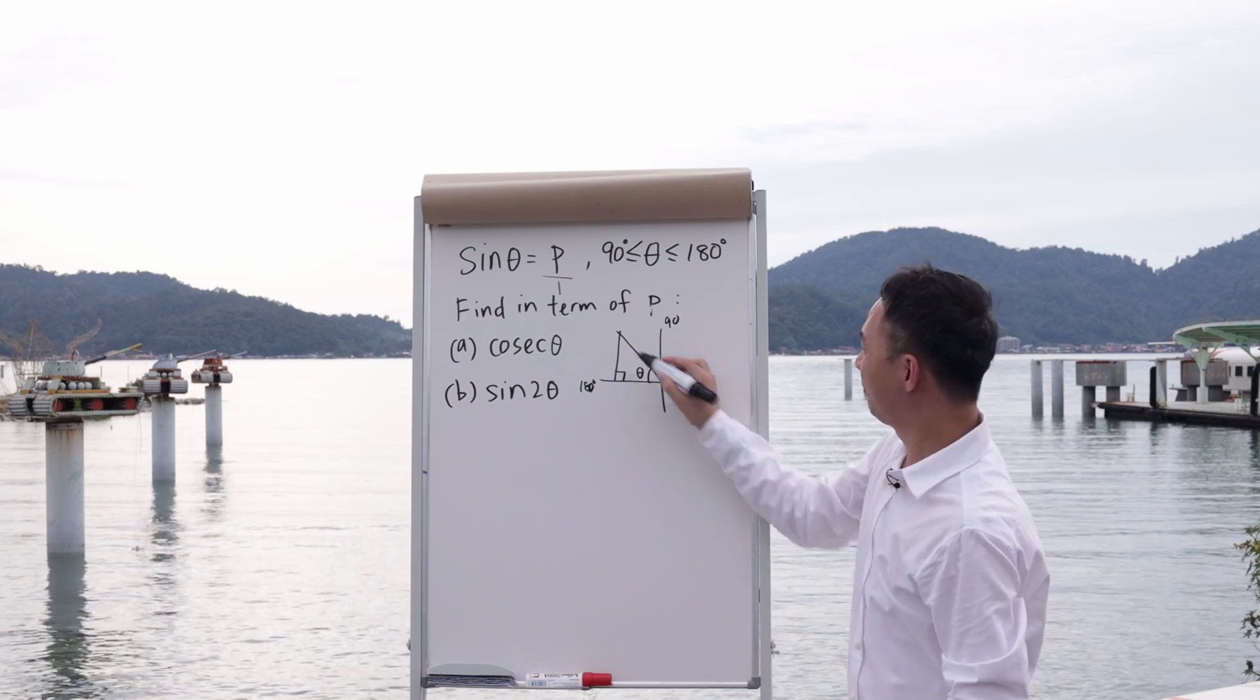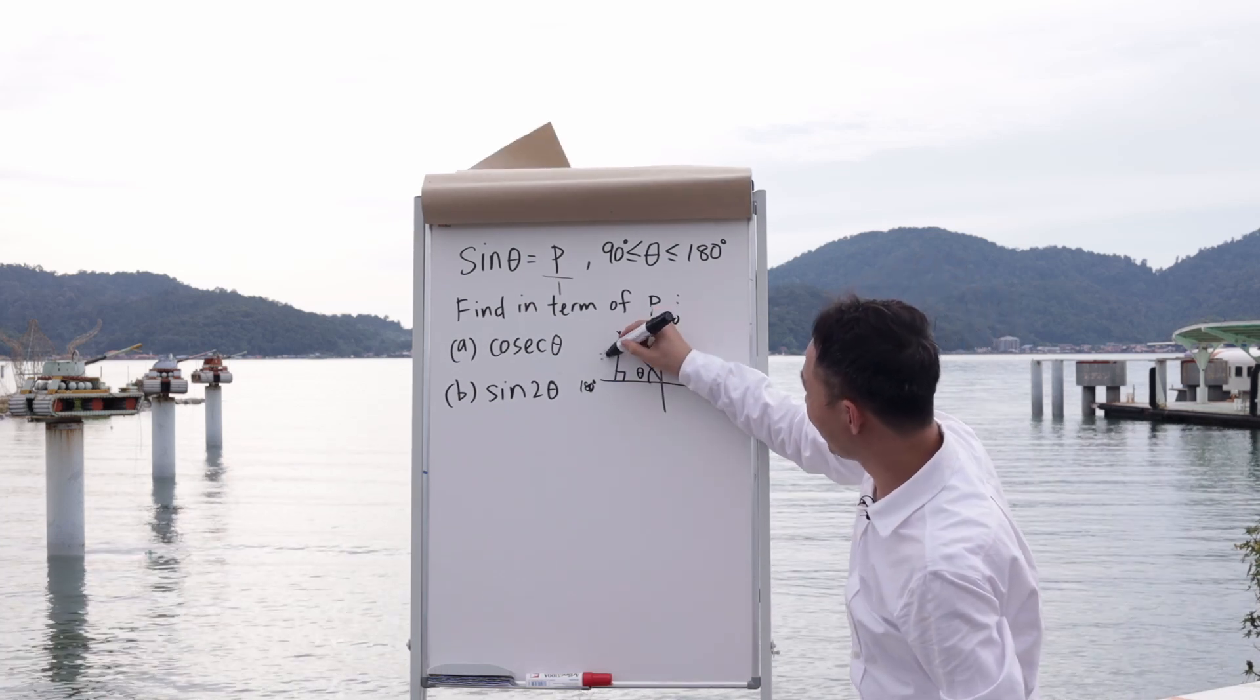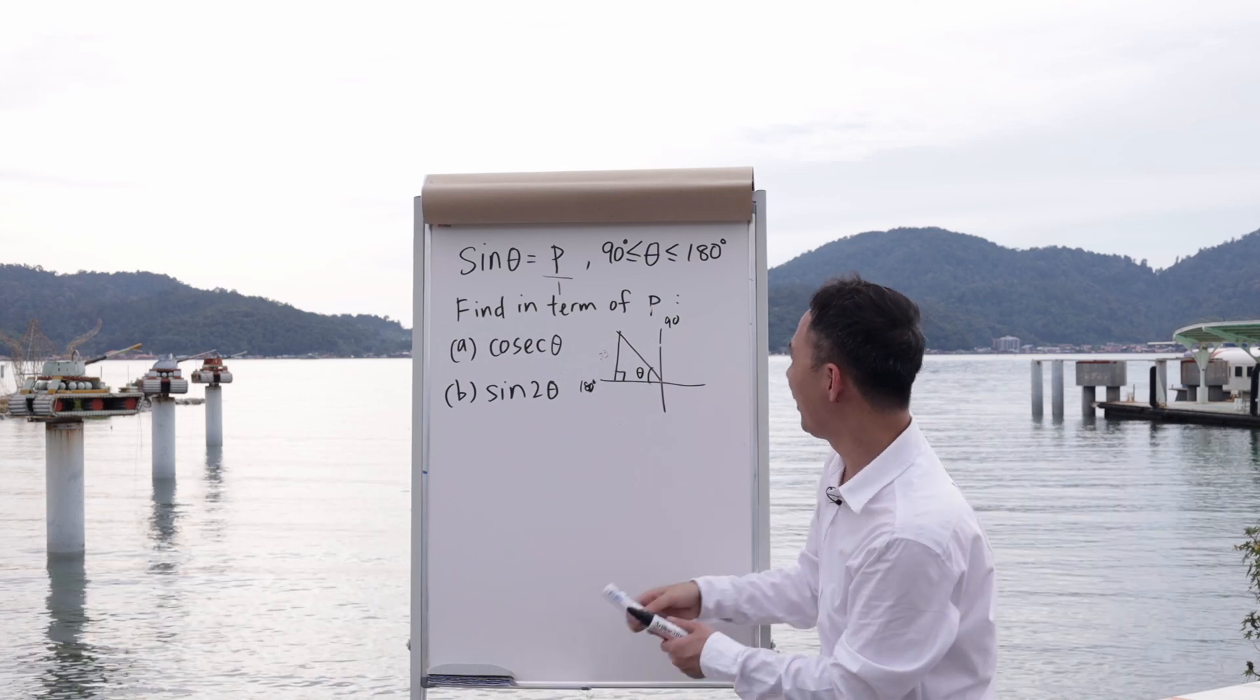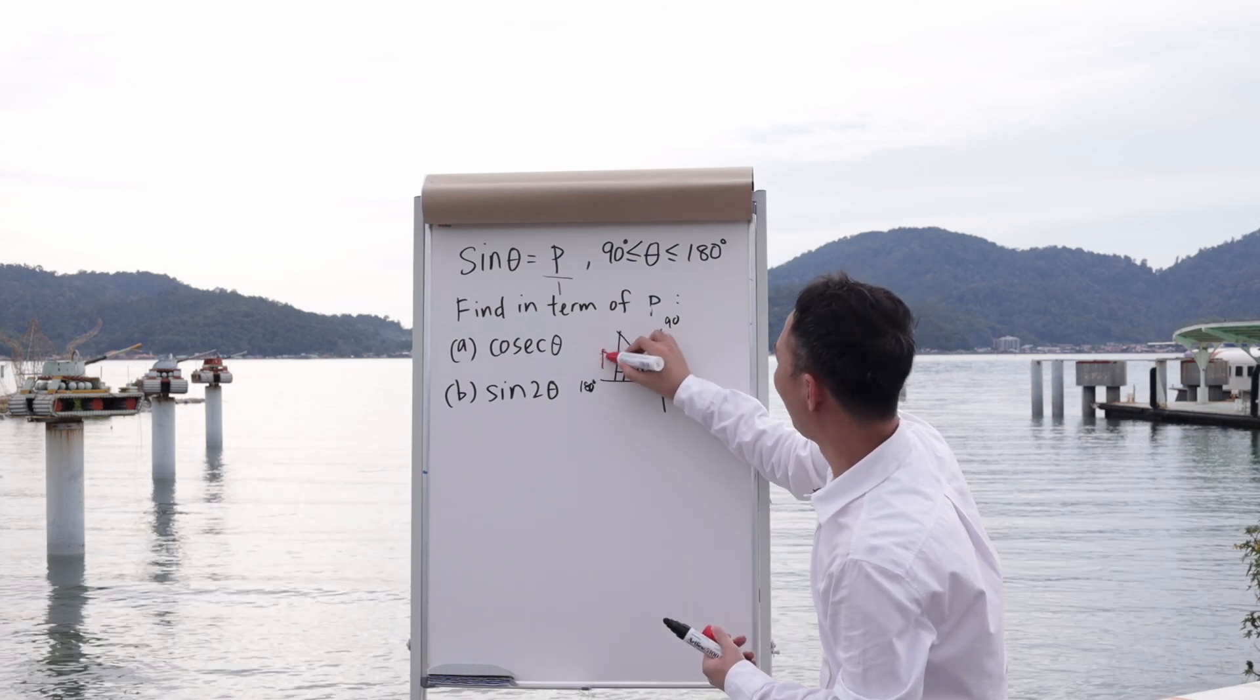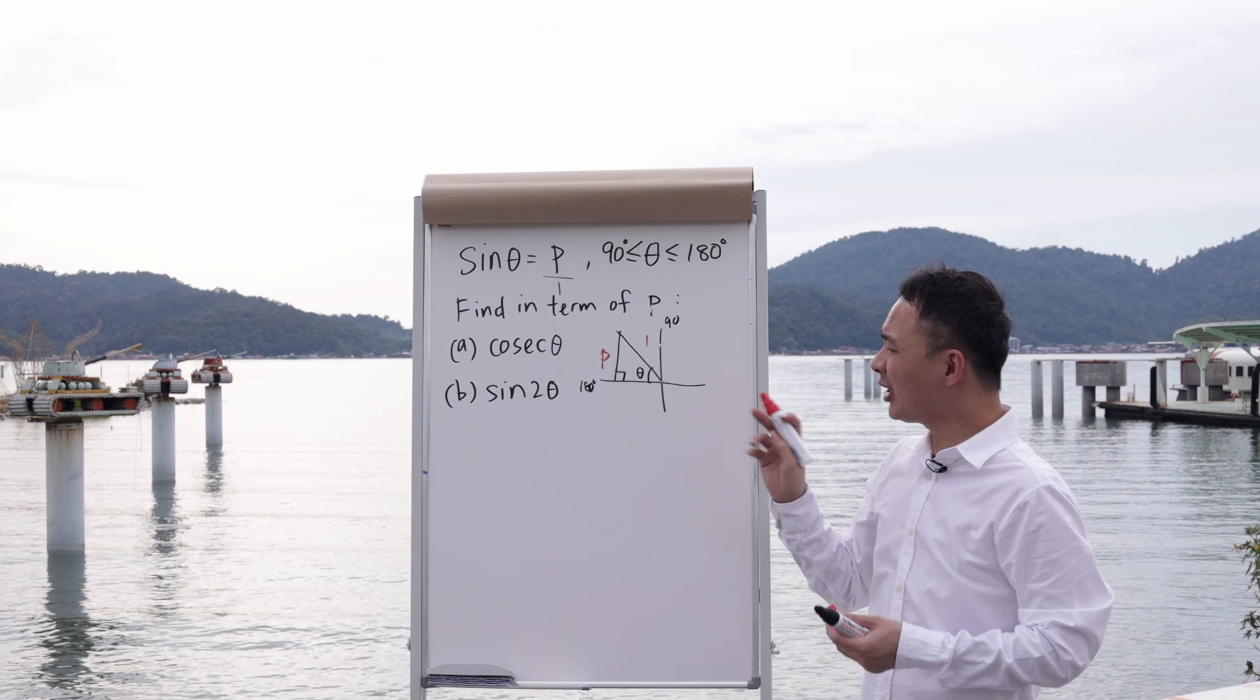So p will be opposite and 1 will be hypotenuse. Therefore, it will be p over 1.